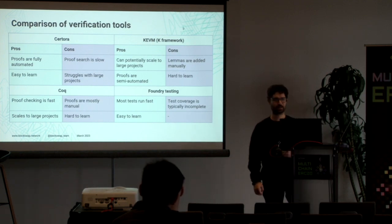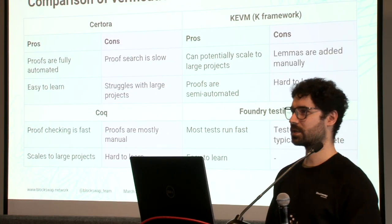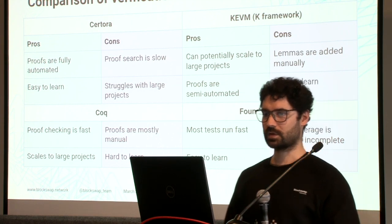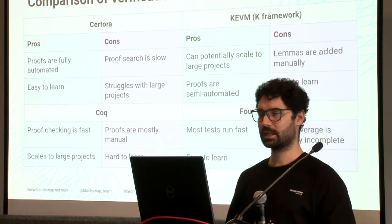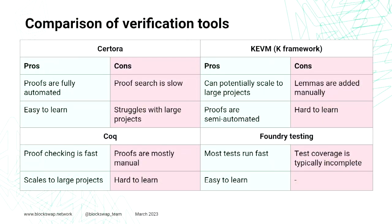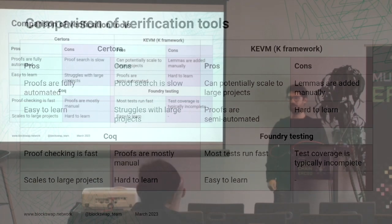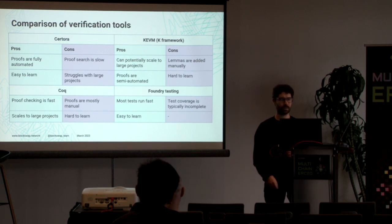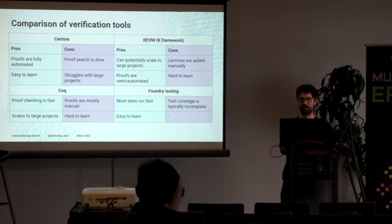At the end, I'd like to compare some of the different verification tools I have worked with. First, Certora: proofs are fully automated — you just write the rules as shown, and the proof says yes or no whether it passes. However, there are some limitations: it is quite slow, especially on large projects. We combat this by mocking up contracts to simplify everything. On the positive side, it is very easy to learn.